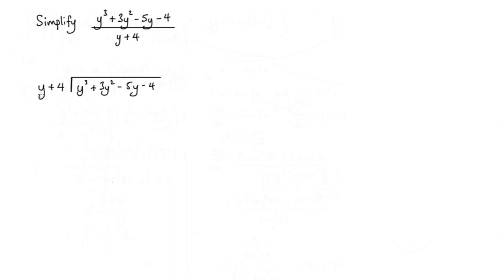How many times does y go into y cubed? Well it goes in y squared times. Now we multiply: y squared times y gives y cubed, and y squared times 4 gives plus 4y squared. We subtract these two terms, so the y cubed terms become 0, and we end up with 3y squared minus 4y squared, which is negative y squared. Then we bring down the next term, which is minus 5y.